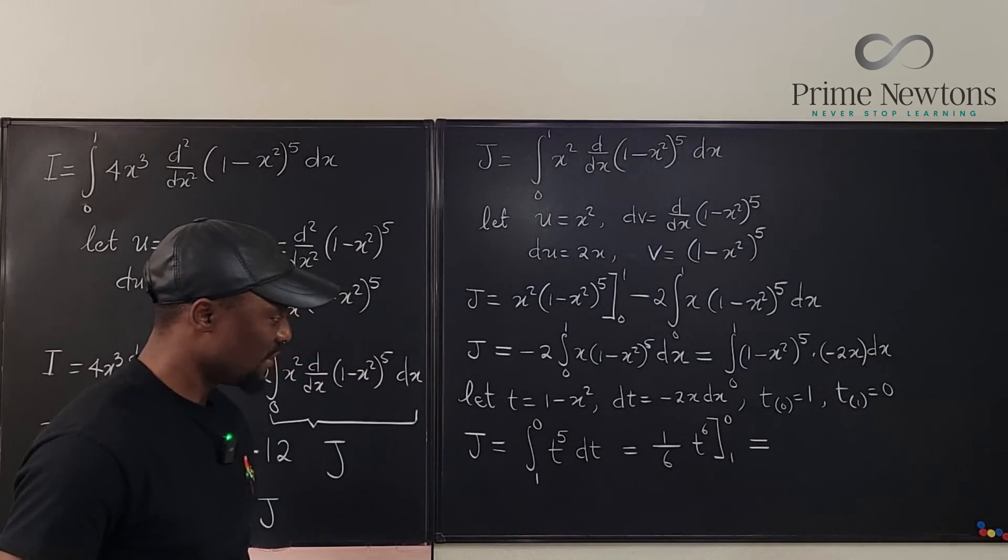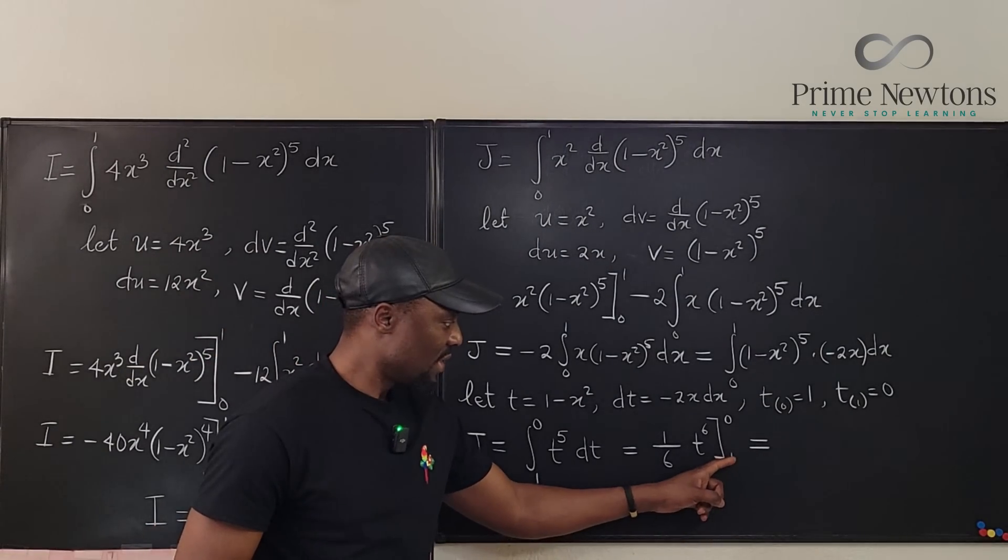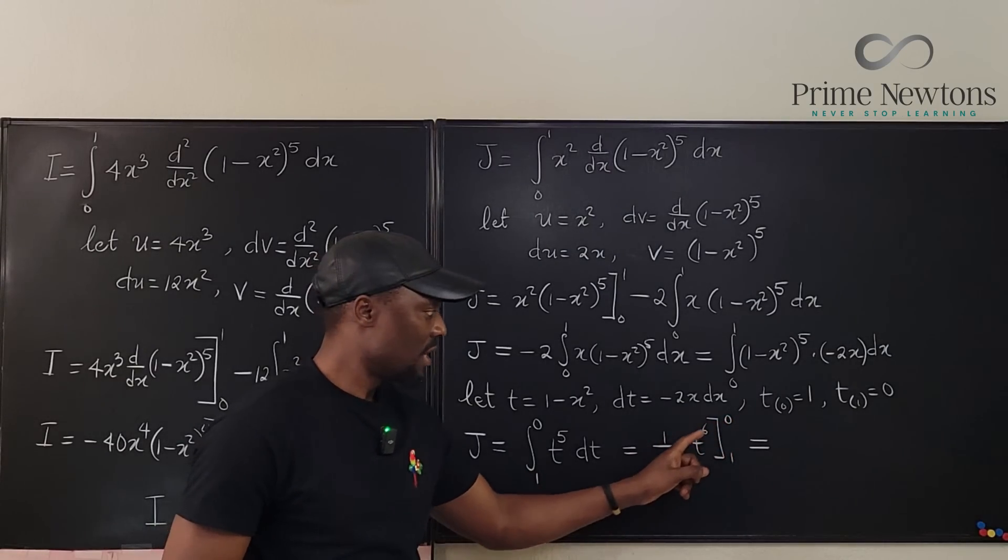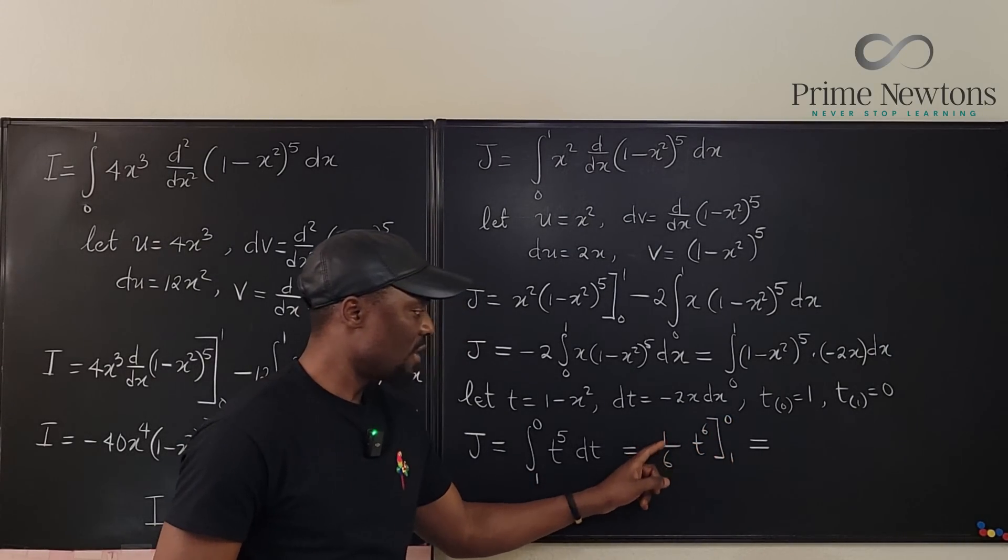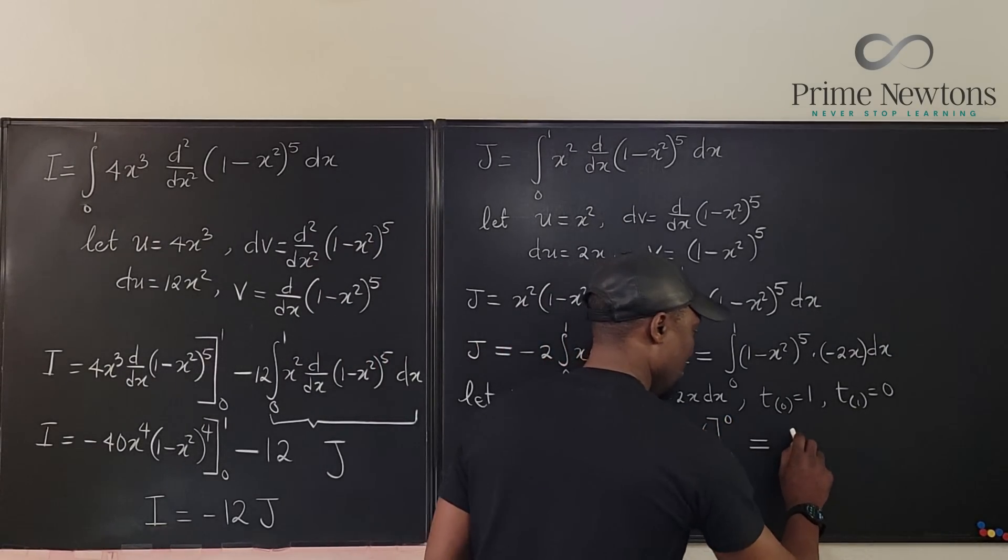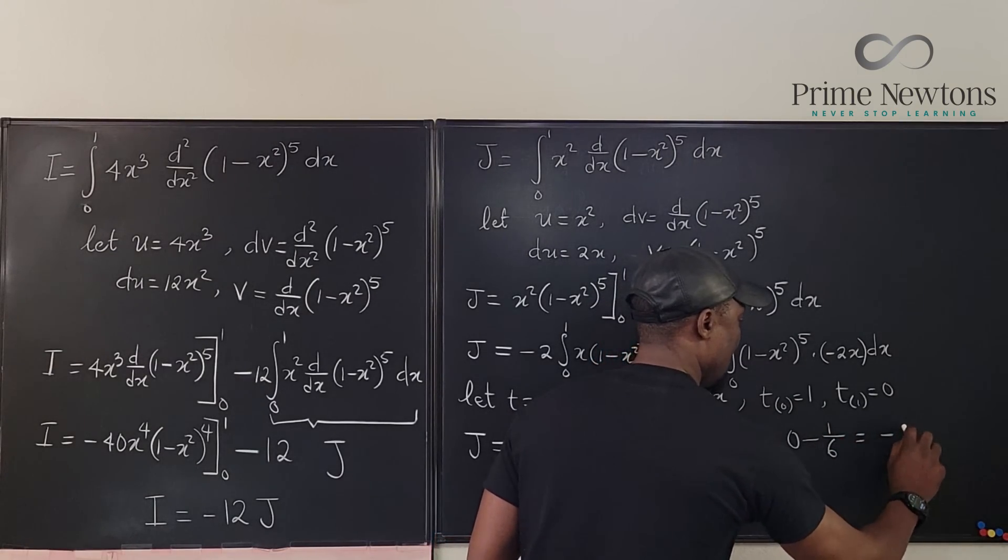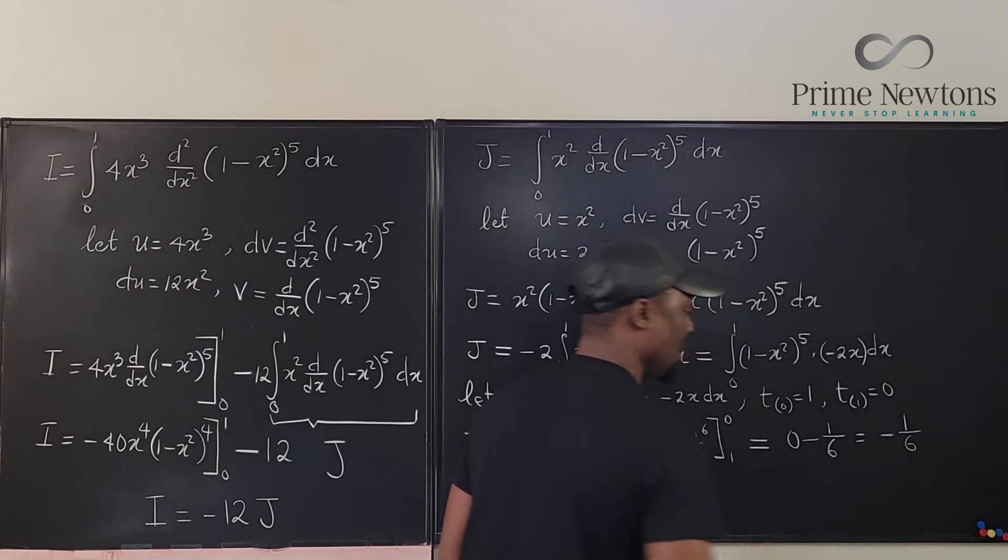So this is going to be equal to 1 over 6 t to the 6 evaluated from 1 to 0. Do you know what that is? This is equal to if you plug in 0 you're going to get 0. If you plug in 1 you're going to get 1 over 6. So this is 0 minus 1 over 6 which is equal to negative 1 over 6. That's our J.